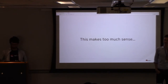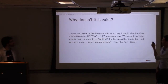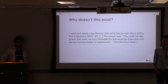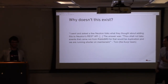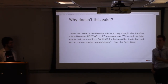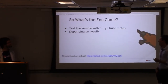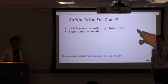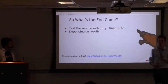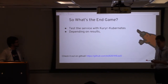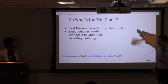This makes too much sense — it's the obvious solution. So why isn't it in place? The Kuryr team asked the Neutron team to add this to the API and they said no, citing duplication concerns and maintenance burden. But the end game is to test it with Kuryr and if it behaves as expected — being faster and more efficient — propose it to OpenStack as a Kuryr sub-project, and if that goes well, it will be integrated.